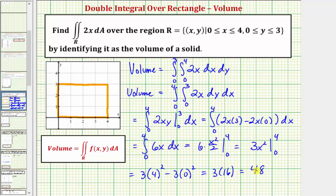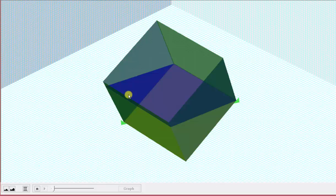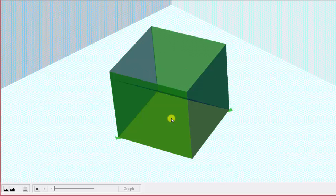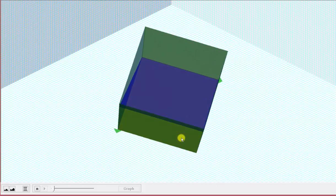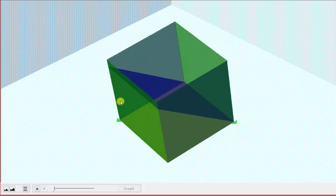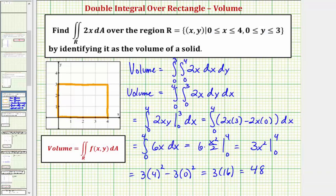So this forty-eight represents the volume of the solid below this blue plane and above the xy plane over this region in the xy plane. And of course because it is volume, we could include units as cubic units.